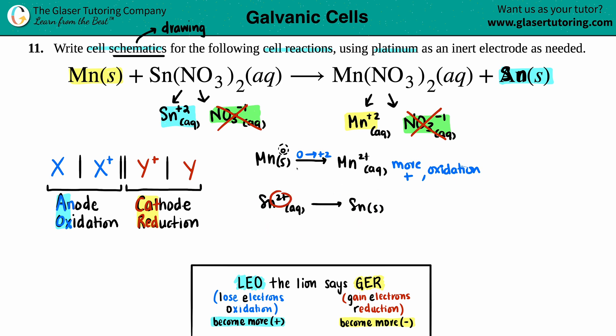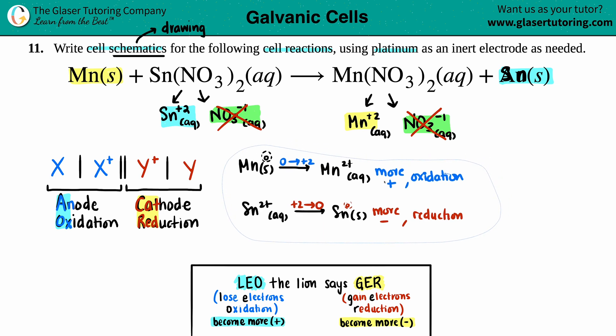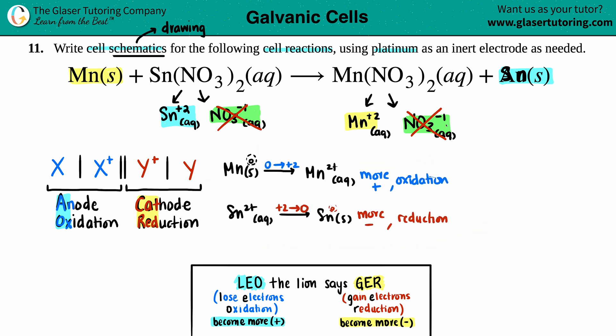So that means that we're just going to double check for our reduction. Tin went from a plus two to a, well, this one didn't have a charge. So zero and you became more negative and that's reduction. So now we know who's going to be on the left side, the Mns, who's going to be on the right side, the Sns.